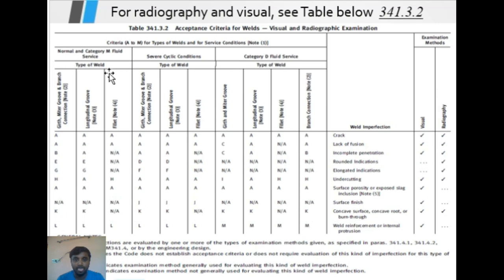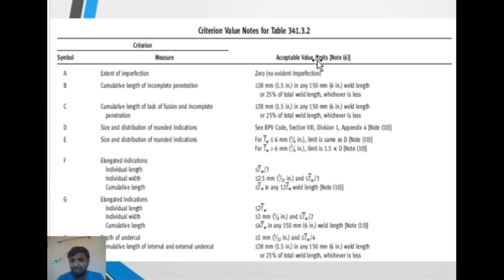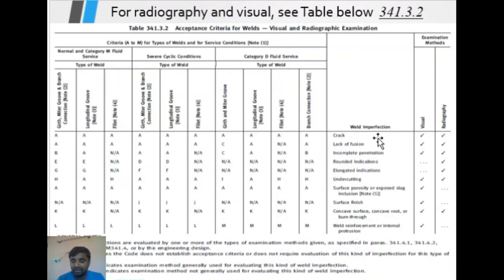Each fluid service category has different acceptance criteria. The weld defects are the same — cracks, lack of fusion — but they are categorized differently depending on the fluid service. For example, symbol A refers to cracks. The examination methods are visual and radiography. The extent of imperfection acceptable for cracks is zero — cracks are not acceptable anywhere.